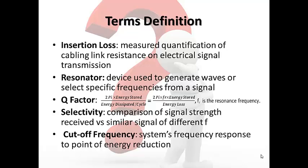The fourth term is selectivity. Selectivity, measured in decibels, compares signal strength received against a similar signal of another frequency. The last term is cutoff frequency. Cutoff frequency is a system's frequency response at which energy flowing through the system begins to be reduced.